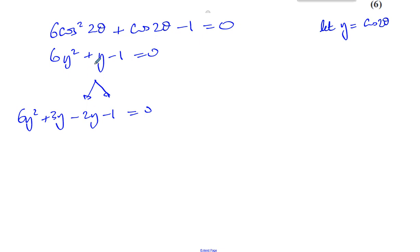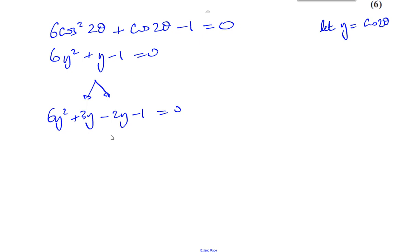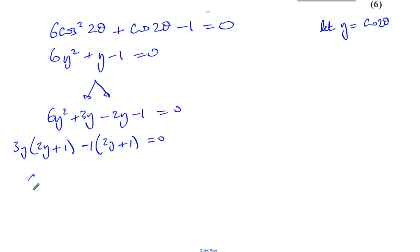Those two numbers, when added together, give exactly 1, and when multiplied give minus 6. Now we can factorize by grouping. 3y is common in the first pair, giving 3y(2y + 1). In the second pair there's nothing common, so we write -1(2y + 1) = 0. That gives us (2y + 1)(3y - 1) = 0.